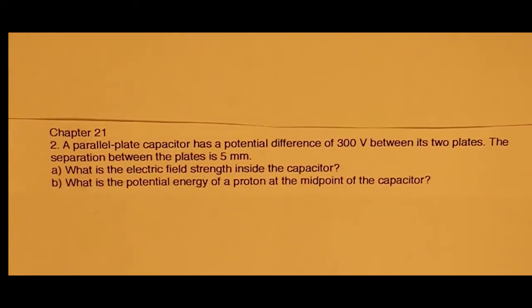For this question, we have a parallel plate capacitor that has a potential difference between its two plates of 300 volts, and the separation between the plates is 5 millimeters. We're asked to find the electric field strength inside the capacitor and the potential energy of a proton at the midpoint of the capacitor.